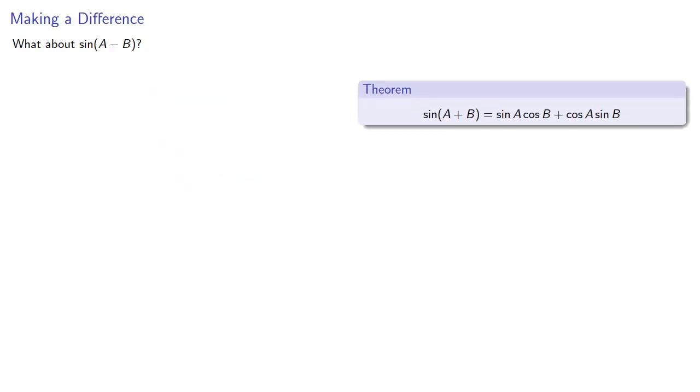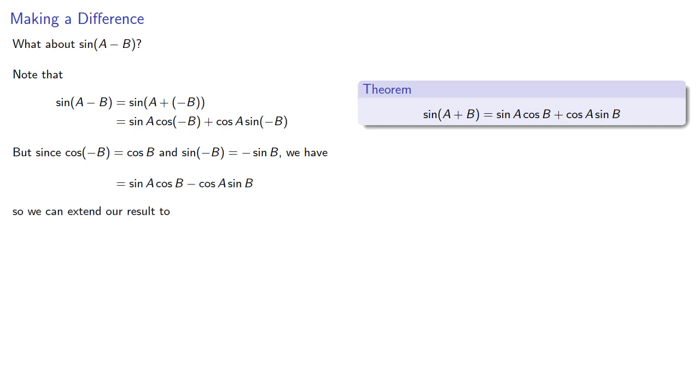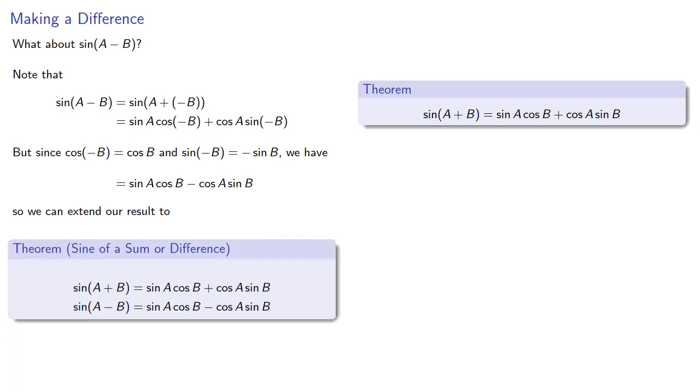What about the sine of a minus b? So we know that a minus b, well that's really the same as a plus negative b, and so we could treat this as the sine of a sum. But the cosine of negative b is just the cosine of b, and the sine of negative b is negative the sine of b. And so we have, and so we can extend our result to include the difference of angles as well.